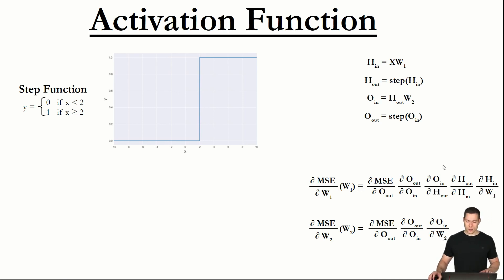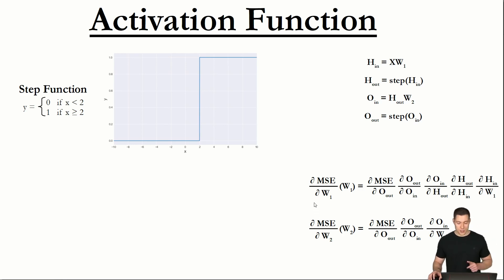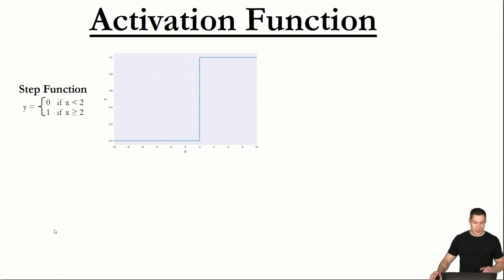Even if the step function were somehow differentiable despite the step, we still couldn't use it because as you can see in the graph the slope is always zero. In the context of our chain rule, we would multiply the other partial derivatives by zero, meaning the update for the weight matrices would also be zero and we wouldn't actually update them. To get around this problem, we need a different activation function — one that doesn't have such a step and doesn't have a slope of zero.